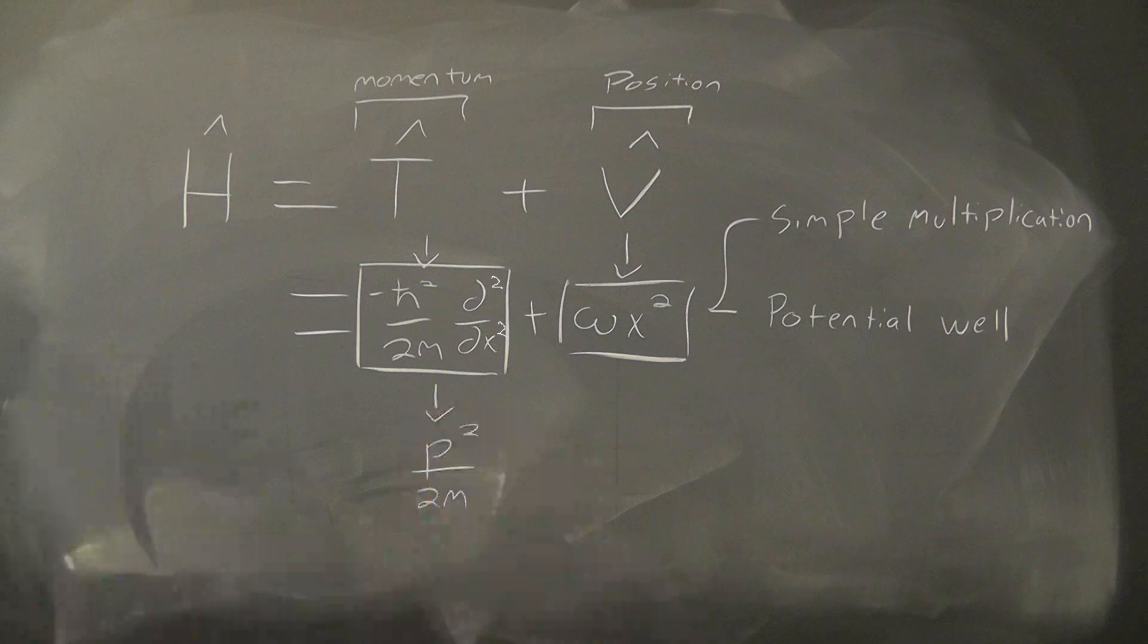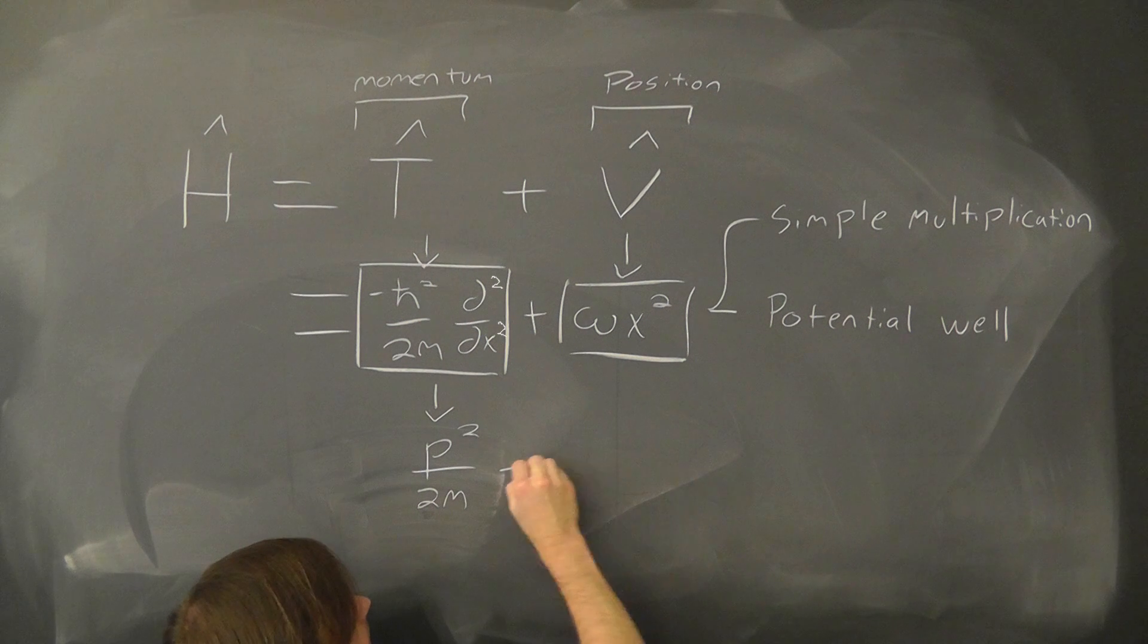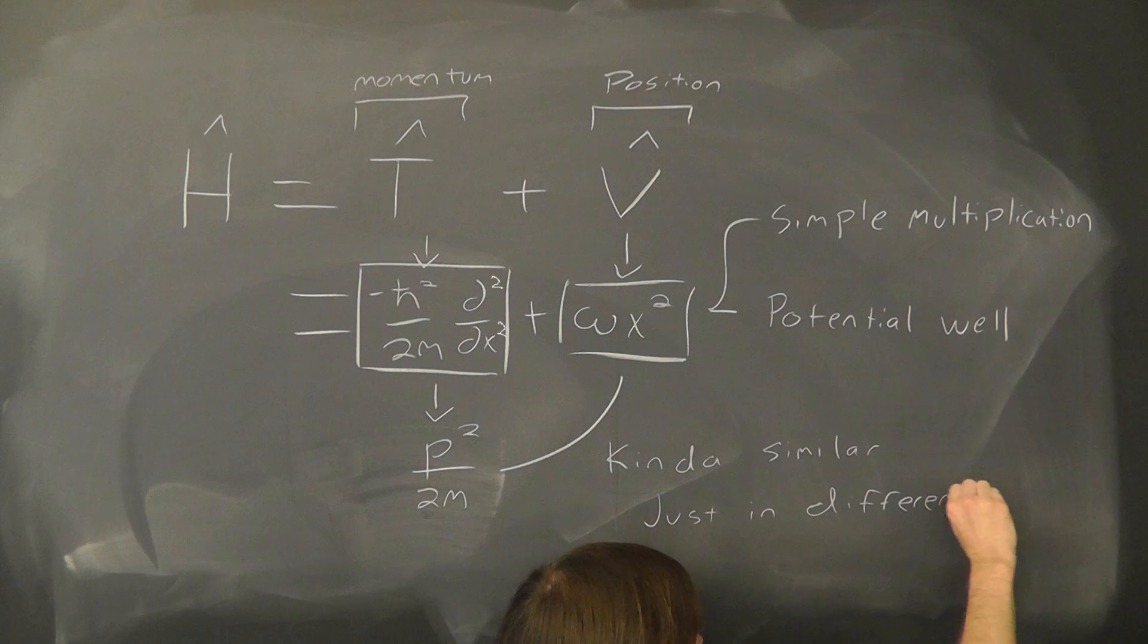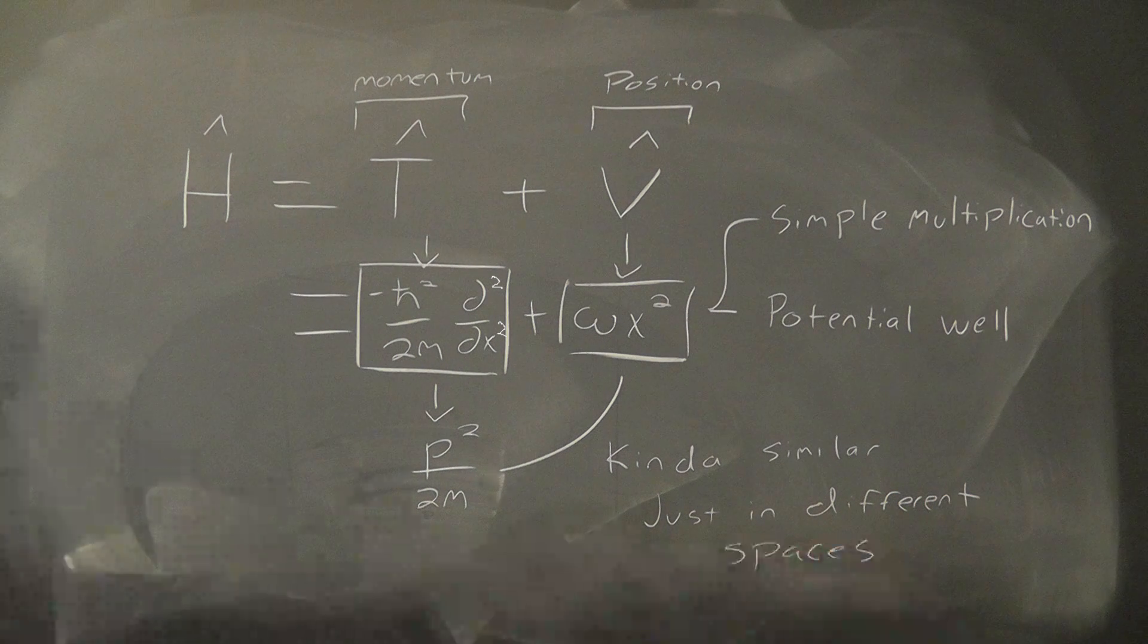In this example, we have an x squared in position space and a p squared in momentum space, which means that we can use the momentum space operator by multiplying by p squared in a similar way to x squared in position space.